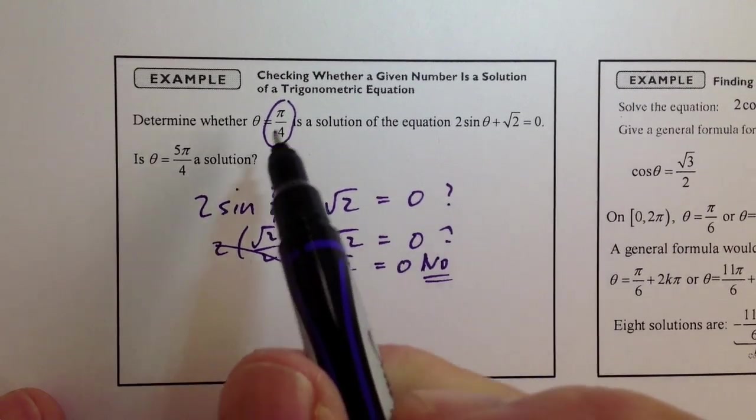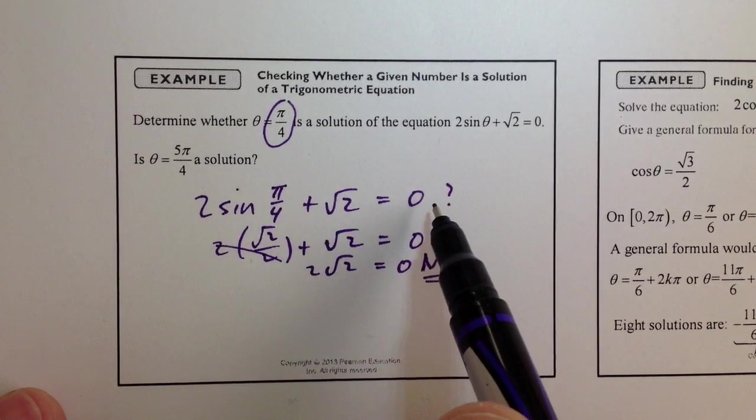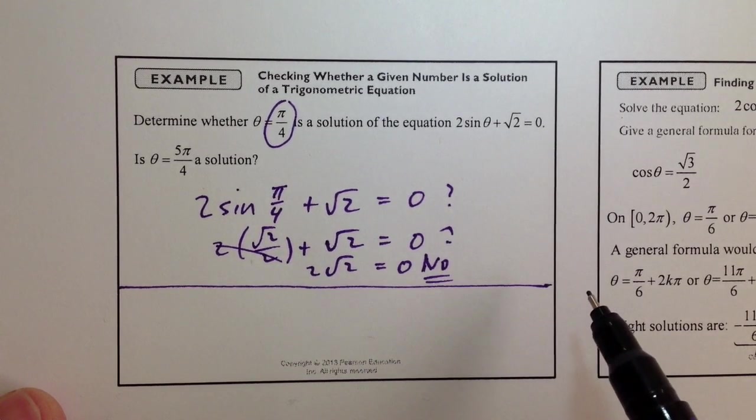So theta equaling pi over 4 is not a solution to this given equation because it doesn't make the equation true. That's the whole idea.